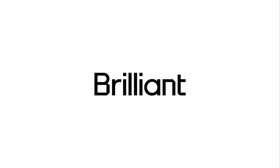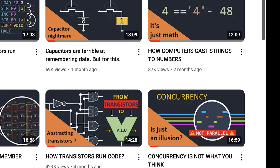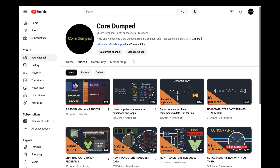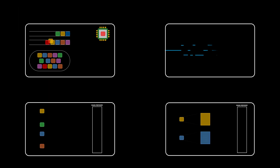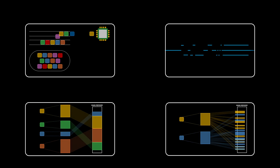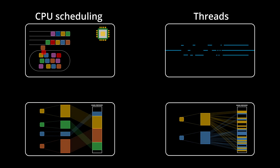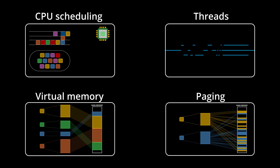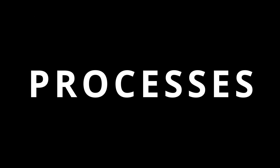This video was sponsored by Brilliant. In a previous episode, we talked about concurrency. The direction of this channel is now shifting toward lower-level concepts more closely related to operating systems, such as CPU scheduling, threads, paging, and virtual memory. Today we're going to dive into the technical details of processes. Hi friends, my name is George, and this is CoreDumpt.